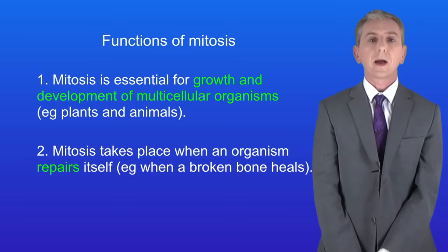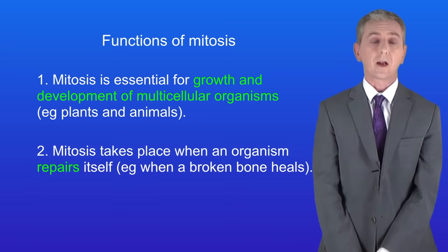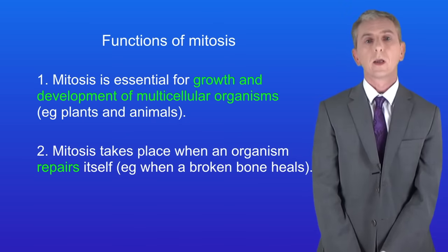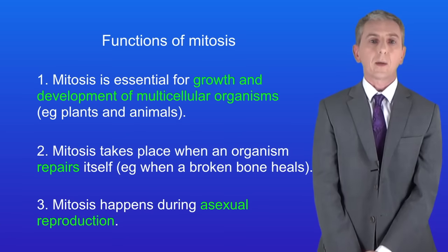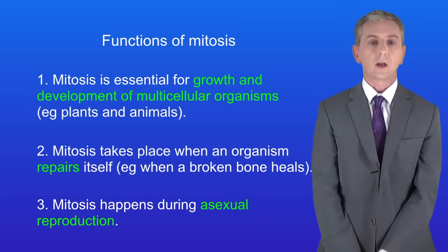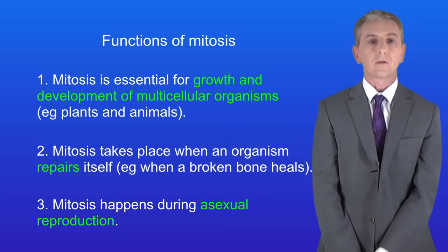Secondly, mitosis takes place when an organism repairs itself — for example, when a broken bone heals. And lastly, mitosis happens during asexual reproduction, which we're going to look at in a later video.